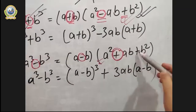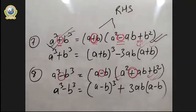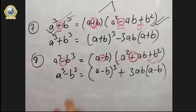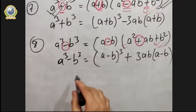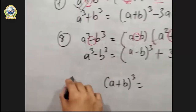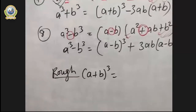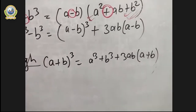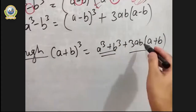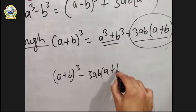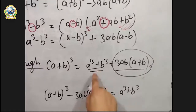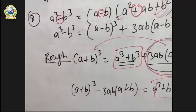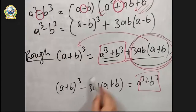The same rule is applied for a³ - b³ as well. It follows the same pattern. a³ - b³ = (a - b)(a² + ab + b²). And the next formula: a³ - b³ = (a - b)³ + 3ab(a - b). Please be very careful about the sign convention — there are signs to watch.